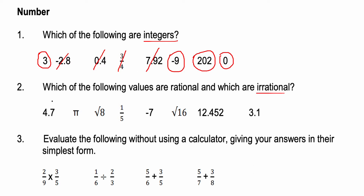Question two: which of the following values are rational and which are irrational? Rational means the decimal equivalent terminates — it doesn't go on forever. Irrational means it goes on indefinitely. So rational is a terminating decimal or a whole number, whereas irrational is non-terminating. 4.7 is rational because it's a terminating decimal. Pi is irrational because it goes on forever. The square root of eight is irrational because the decimal goes on forever.